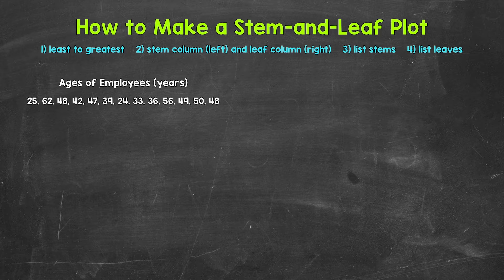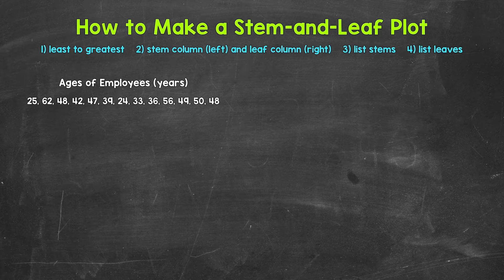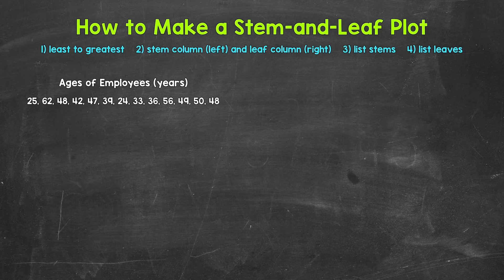Stem and leaf plots are a way for us to organize and display data. We take the data and organize everything in a table called a stem and leaf plot. Let's jump into our first example where we have the ages of employees at a business. The first thing we need to do is order the data from least to greatest if it's not already done so.